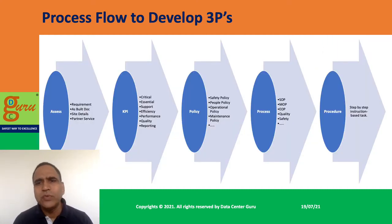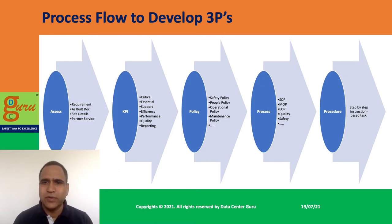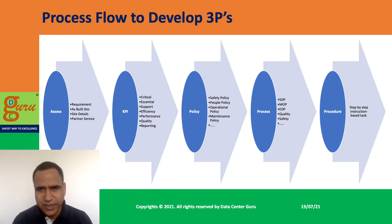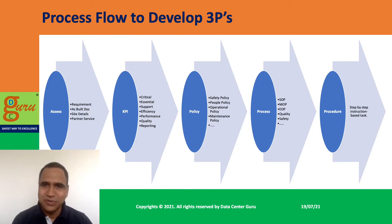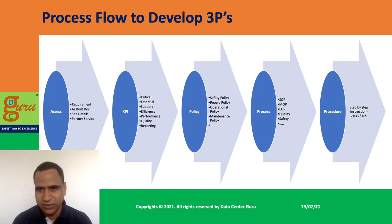When we talk about how to develop these three P's, I have created a broader-level framework with a step-by-step flow so you can understand it easily and develop them more effectively. The first stage is the assessment phase — checking the current state and checking requirements. For operational sustainability, you understand the customer's requirements and expectations, then understand the current data center infrastructure. You need the entire documentation — in technical language we call it as-built documentation or as-built documents.